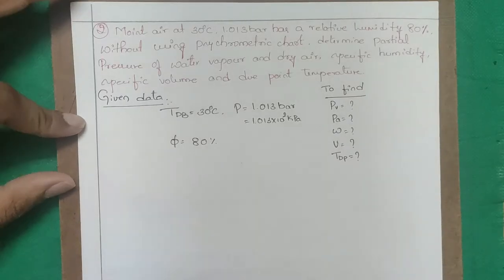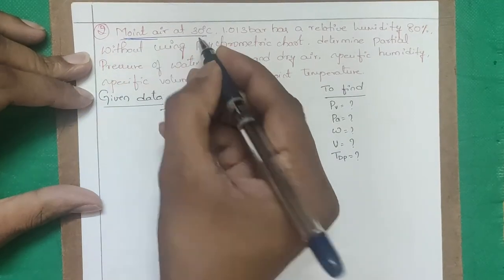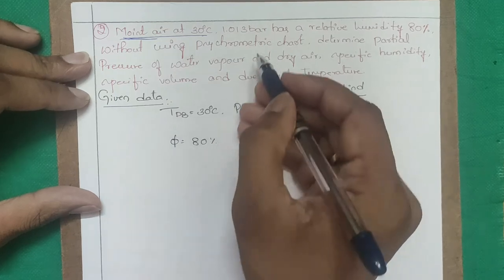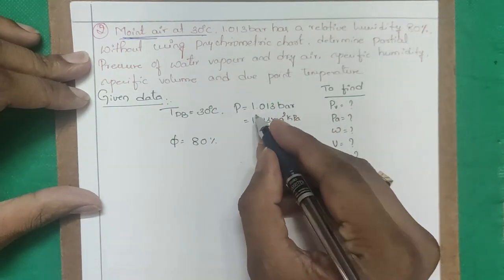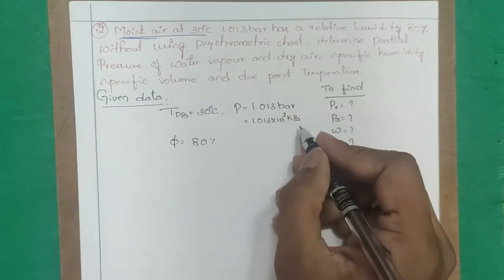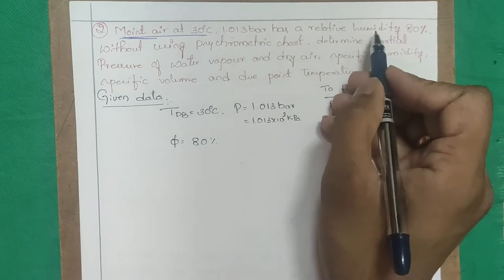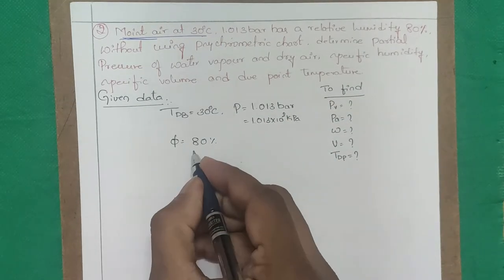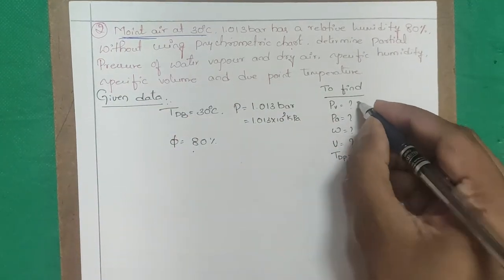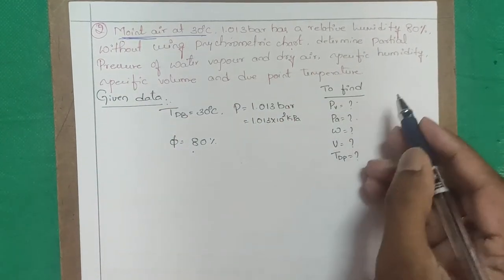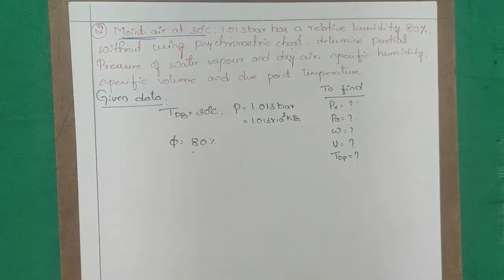Problem 2: moist air with dry bulb temperature = 30°C, total pressure = 1.013 bar = 101.3 kPa, relative humidity = 80%. Determine: partial pressure of water vapor PV, partial pressure of dry air PA, specific humidity, specific volume, and dew point temperature.